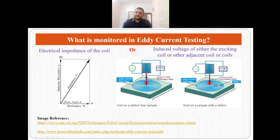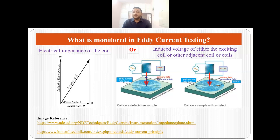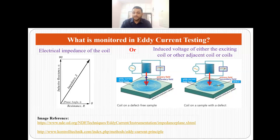Now what is really monitored in eddy current testing? NDE engineers usually monitor two things: either they monitor the electrical impedance of the coil — how much it is increasing or decreasing when moving across a surface with and without a defect — or they measure the induced voltage of either the exciting coil or other adjacent coils. In a defect-free sample the secondary field is much higher, whereas in a defective region the secondary field is much lower, and this change can be detected. So electrical impedance and induced voltage are the two things monitored in eddy current testing.